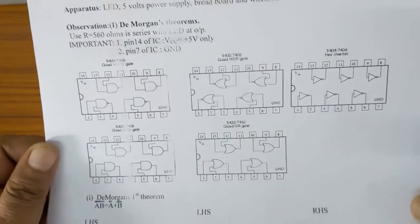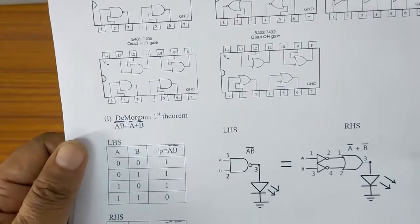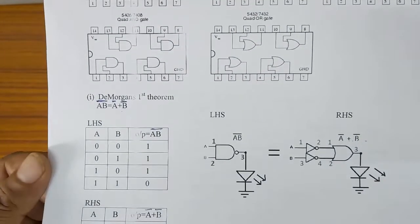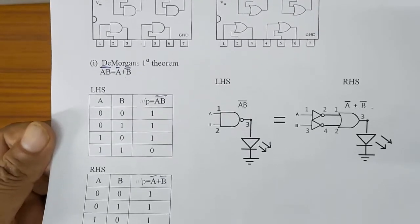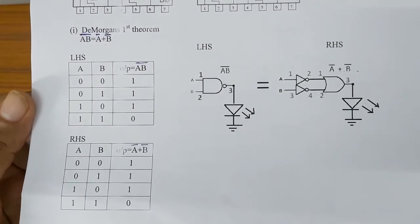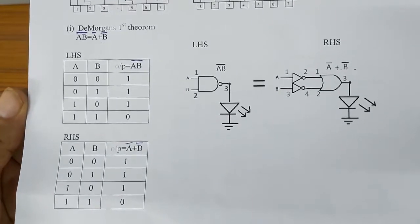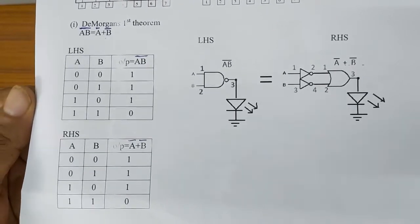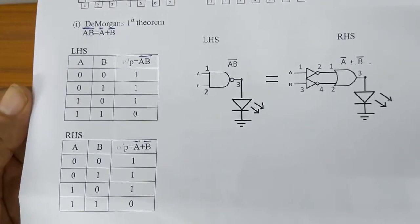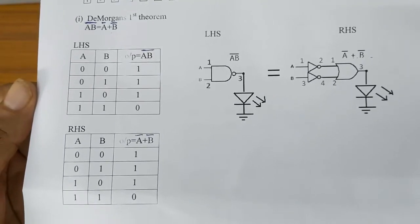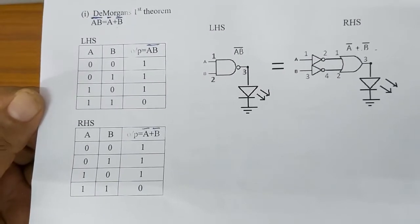The various ICs required are given here. De Morgan's first theorem states: A dot B, the whole bar, equals A bar OR B bar. The truth table for the left hand side and the right hand side have the same outputs. When A equals 0 and B equals 0, A equals 0 and B equals 1, or A equals 1 and B equals 0, the output is 1 on both sides. But when A equals 1 and B equals 1, the output is 0 on both sides.